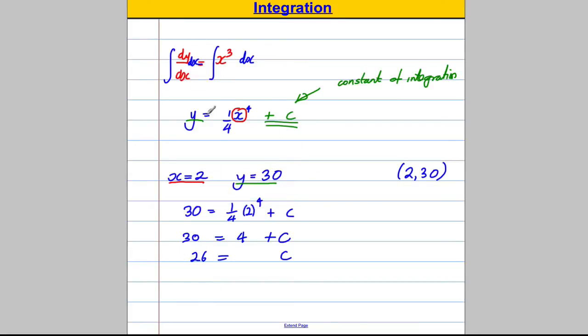Therefore c must be 30 take away 4 which is 26. And therefore we could state that actually our curve is y equals a quarter x to the power of 4, but we now know what this c is, this constant, is plus 26. We actually managed to find the c. It's no longer an unknown number, it's a found number because we know a pair of coordinates that the curve goes through. I'm going to do two examples going through this with you in detail. That was the big picture. So here we go.